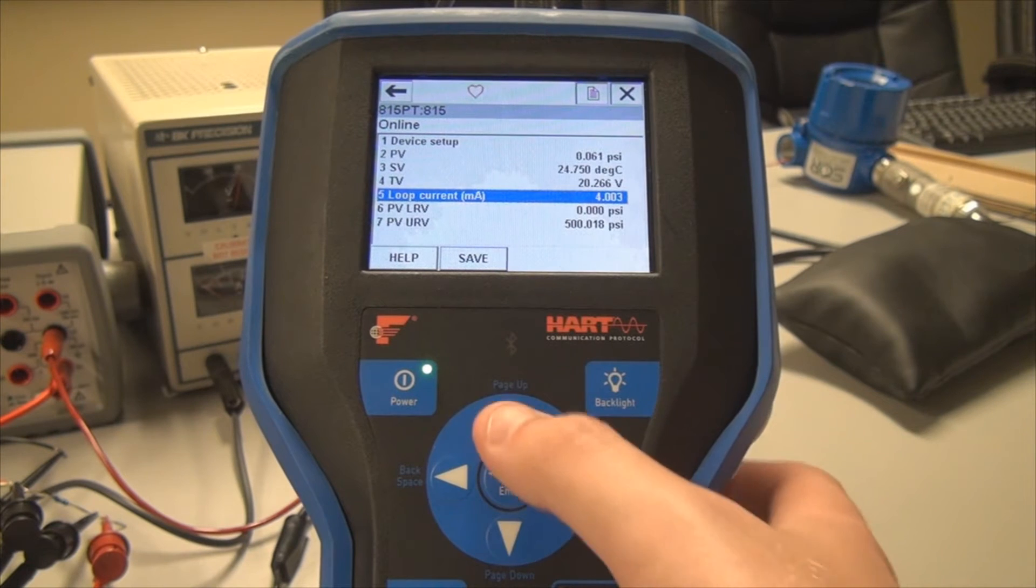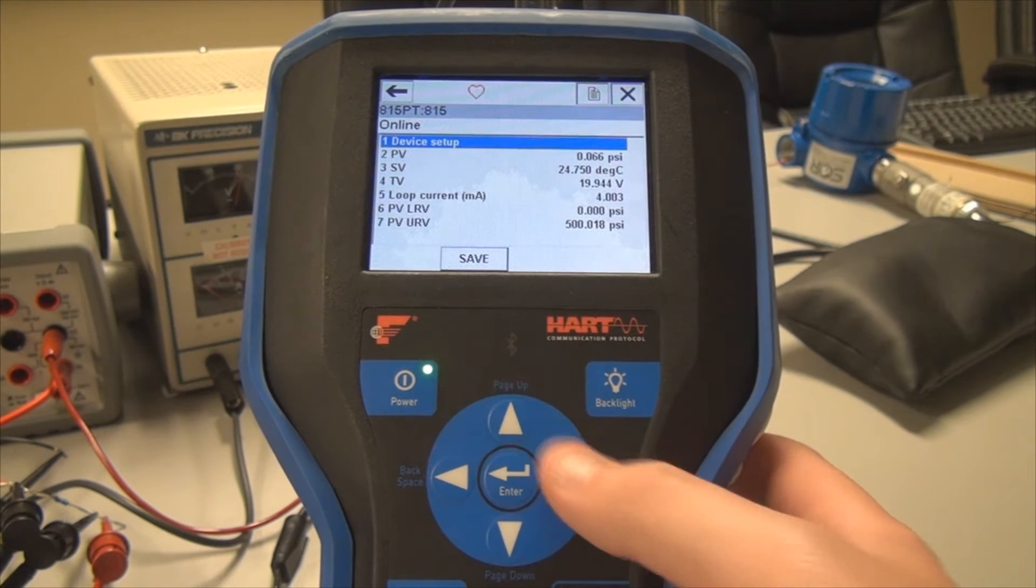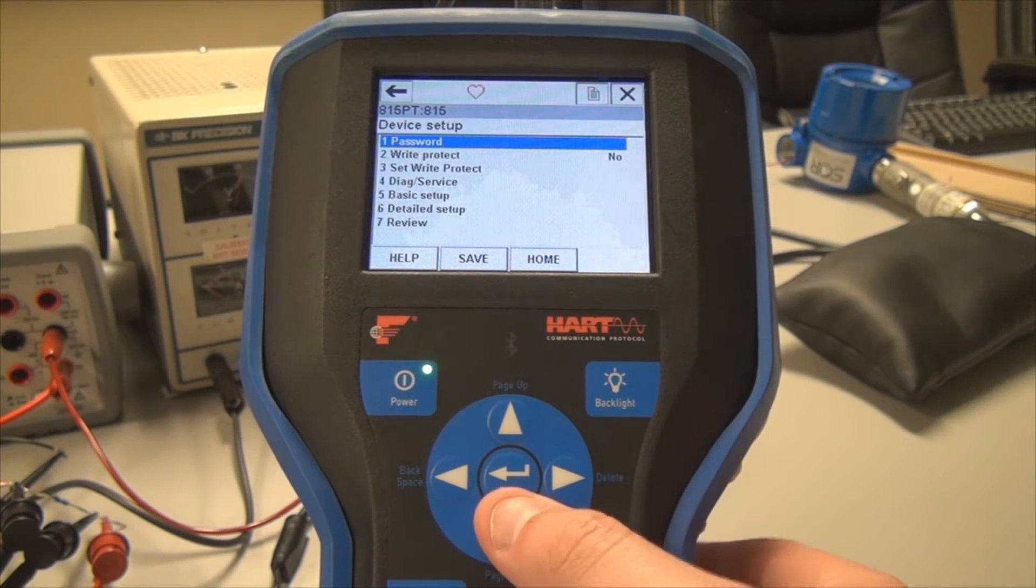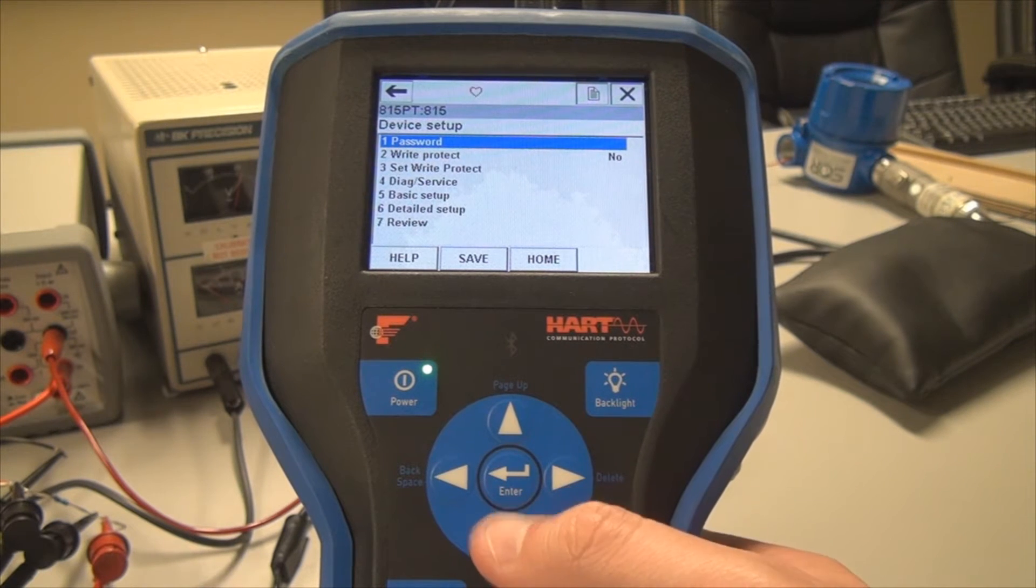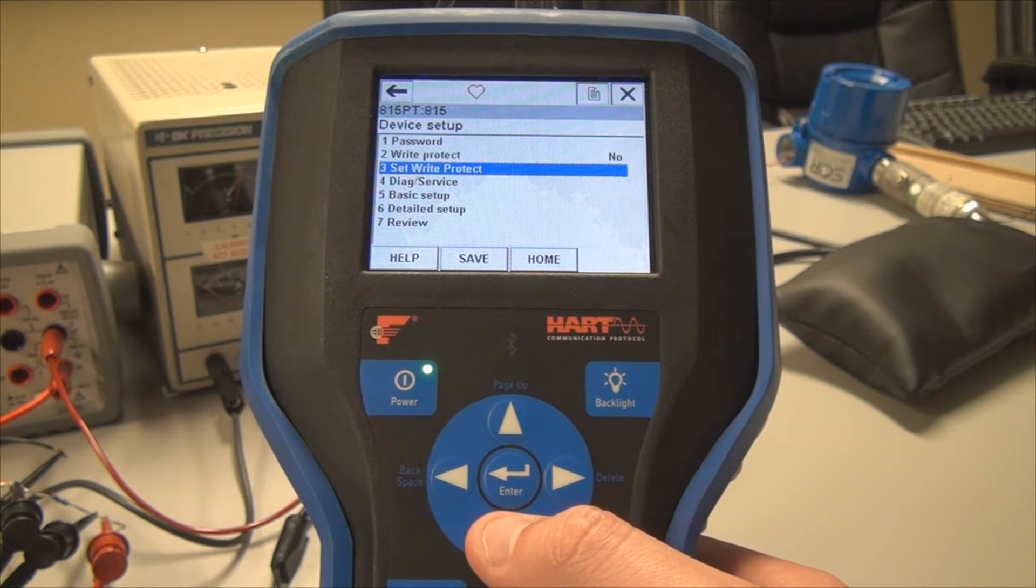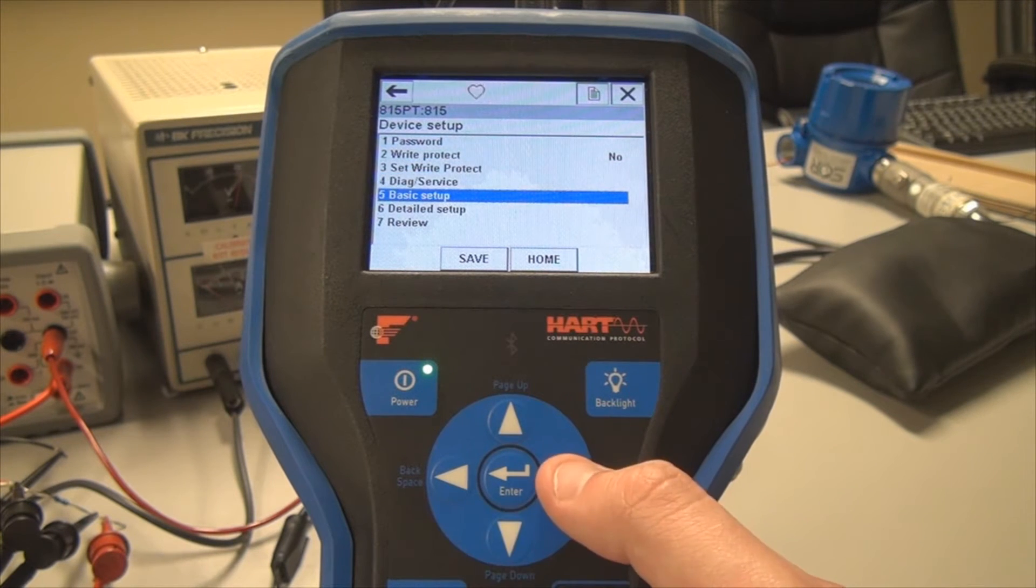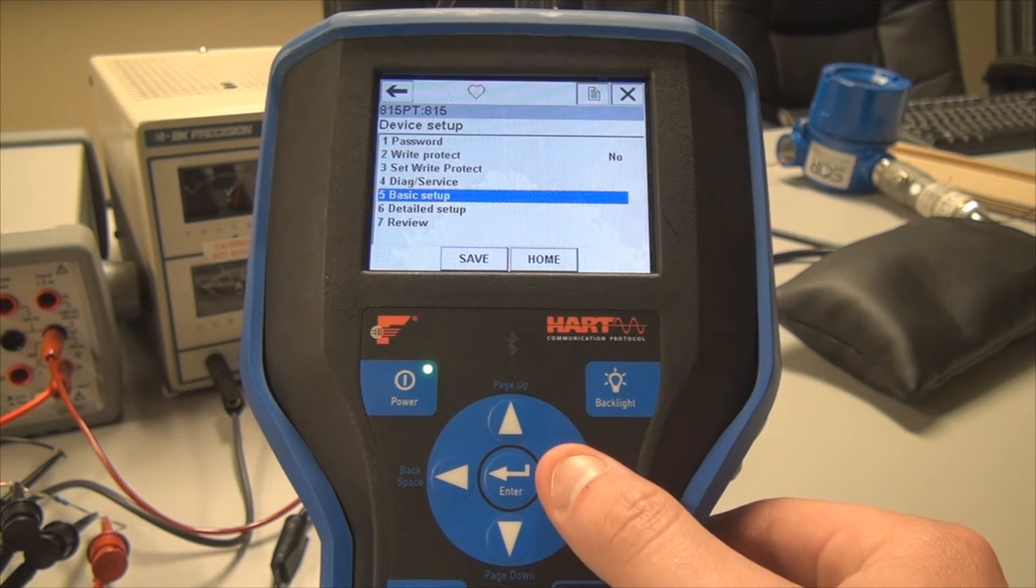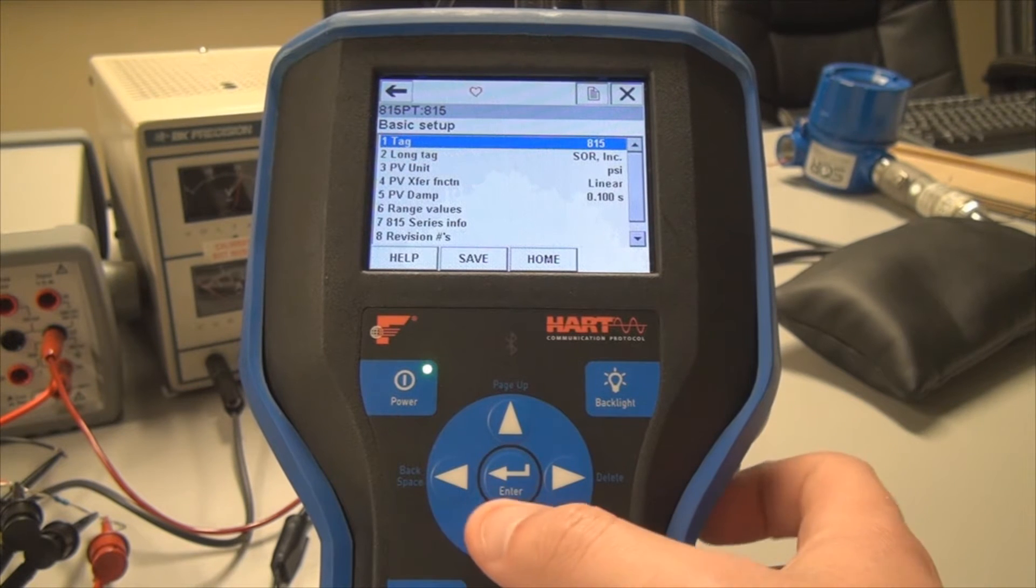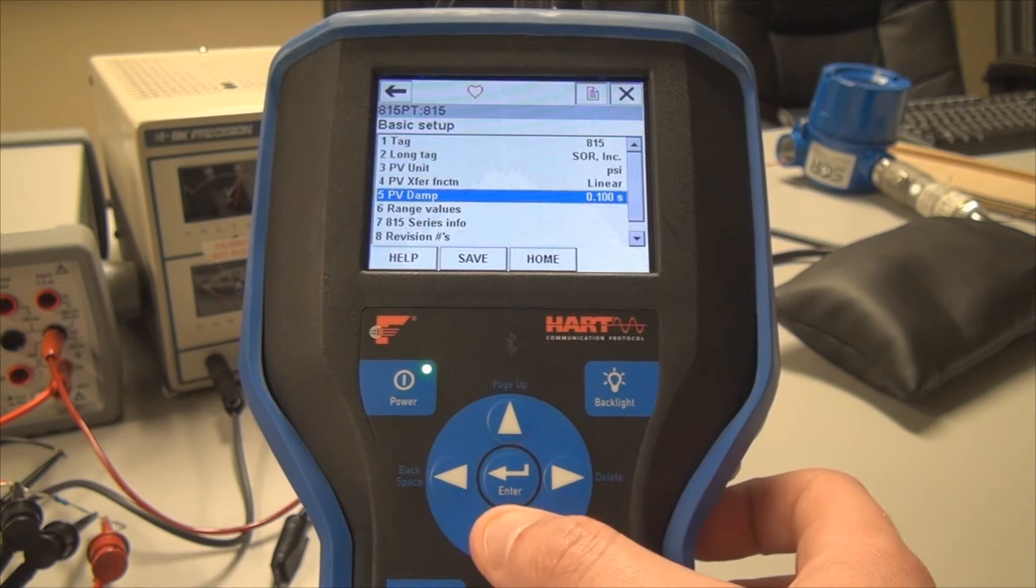So first thing I'm going to show you is we're going to go into device setup here. There's a number of things that you can do, but the first thing I'm going to show you is how to set the zero and span manually. So you're going to go to number five, basic setup, and then you're going to come down to range values.